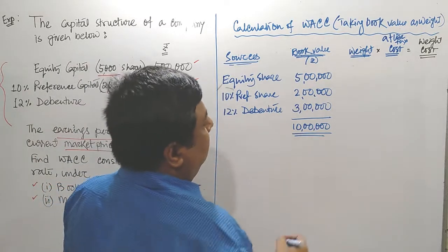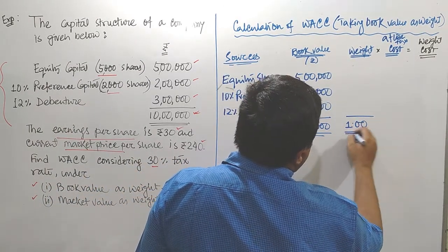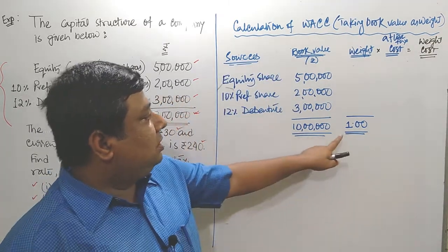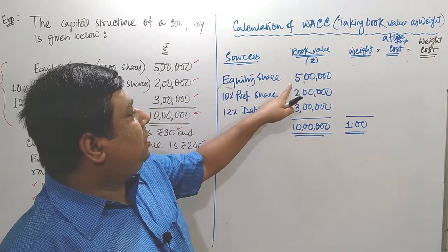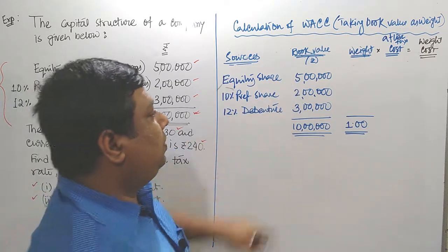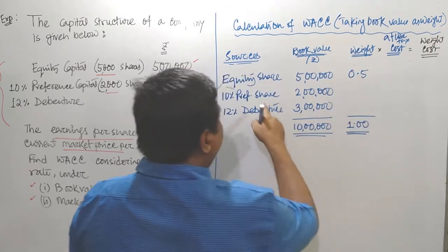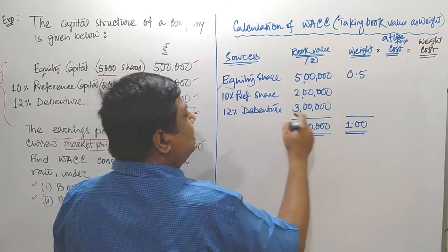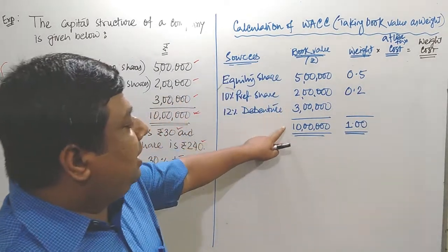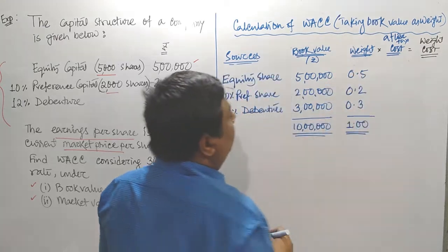Let's calculate the weight of each component. Total 10 lakhs is considered as 1. For equity share capital, it is 5 lakhs divided by 10 lakhs, giving 0.5. For preference capital, 2 lakhs divided by 10 lakhs gives 0.2. For debenture, 3 lakhs divided by 10 lakhs gives 0.3.